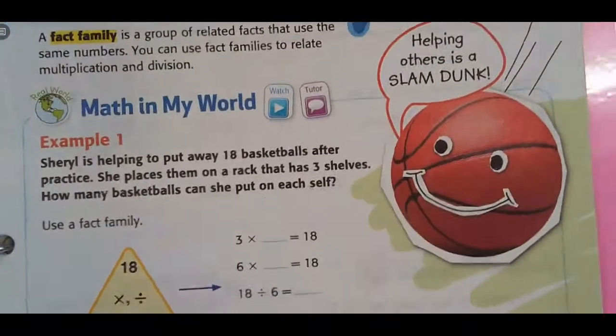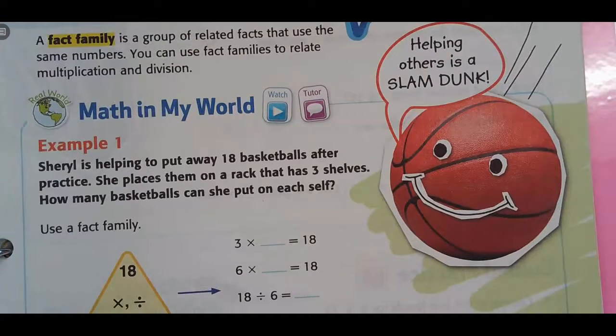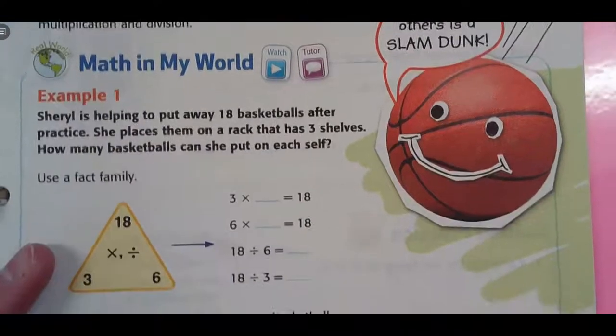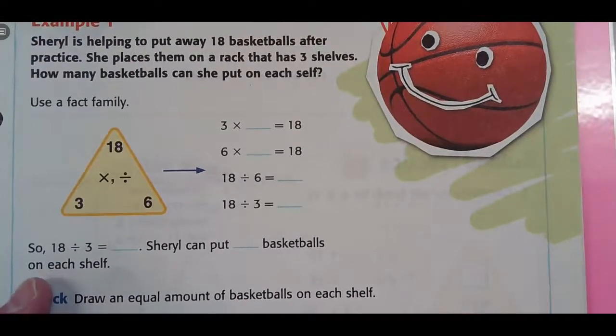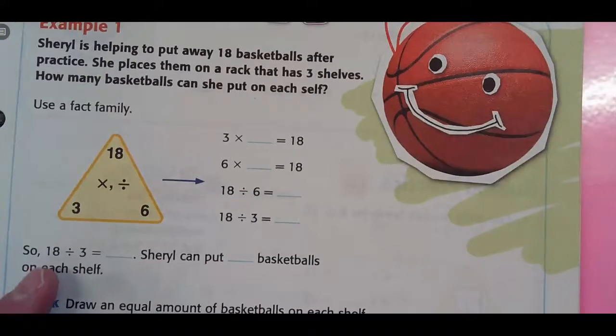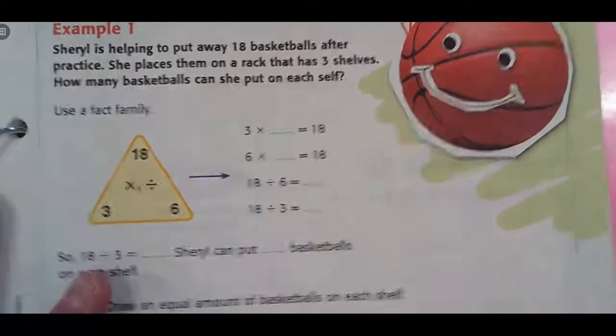Example number 1. Cheryl is helping put away 18 basketballs after practice. She places them on a rack that has three shelves. How many basketballs can she put on each shelf? You're going to use a fact family. Now, I am going to color code this. You do not have to do this, but I want you to see the magic.